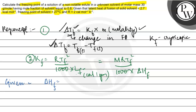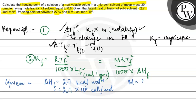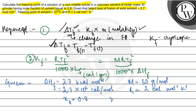Given: ΔHf ki value hai 2.7 kilocalorie per mole, ya isse 2.7 × 10³ calorie per mole likh sakte hain. M (molar mass of solvent) ki value di gayi hai 30 grams per mole. R (gas constant) ki value di gayi hai 2 calorie mol⁻¹ K⁻¹. Mole fraction of solvent x_A diya hua hai 0.8, toh x_B = 1 − x_A = 0.2. Aur ek T_f ki initial value di gayi hai 27 degree Celsius.